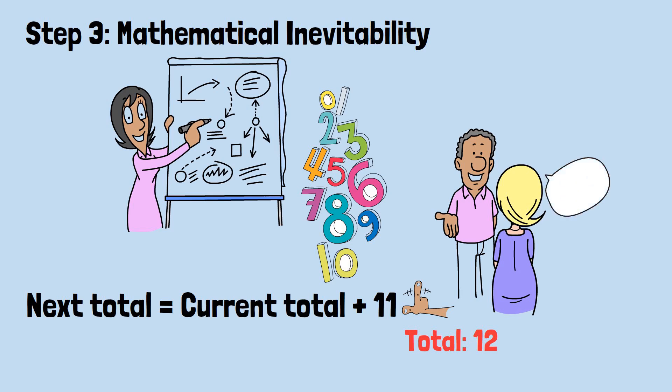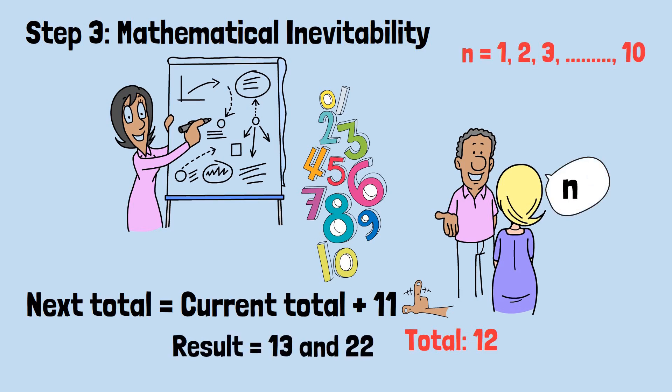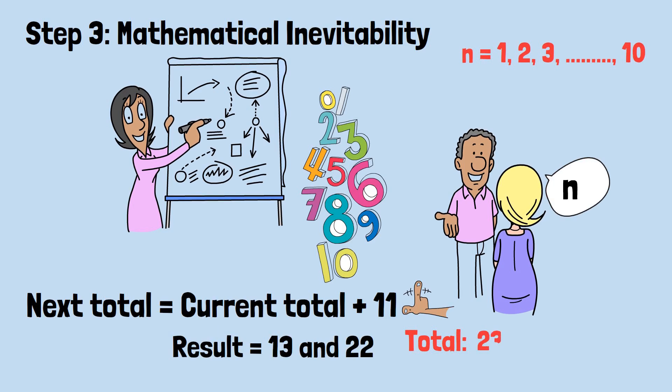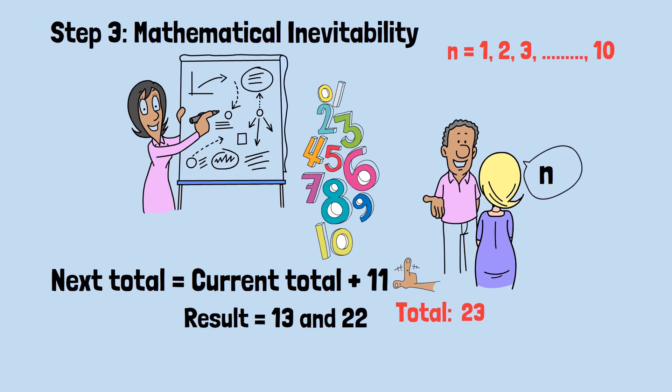When the total is 12 and your opponent plays any number from 1 to 10, the result will be somewhere between 13 and 22. Your response will always bring it to exactly 23. When it's 23, their move puts it between 24 and 33, and you bring it to exactly 34. This mathematical lockstep continues inexorably toward 100.